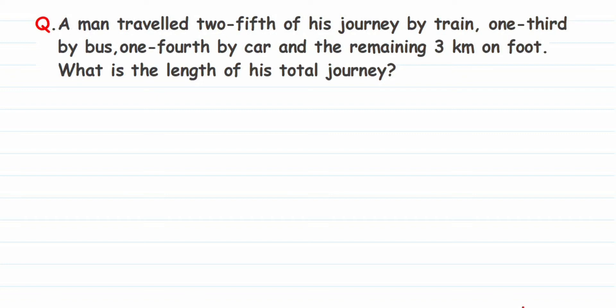Here I am doing a question from linear equations. This is a very important question. The question is: a man traveled two-fifths of his journey by train, one-third by bus, one-fourth by car, and the remaining three kilometers on foot. What is the length of his total journey?